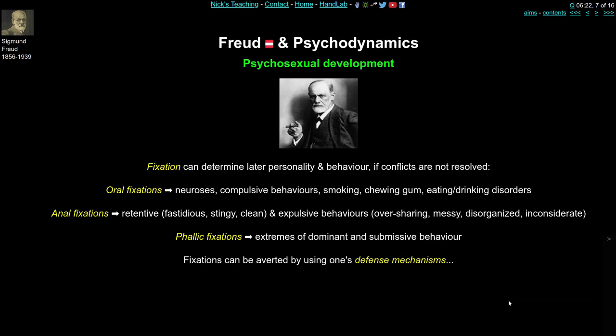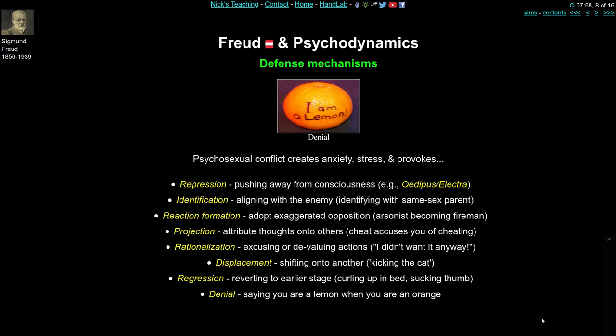Not everyone gets fixated at these stages, partly because we're able to defend ourselves from the traumas and conflicts that arise. We do this by using defence mechanisms, of which there are many — and this is pretty important for Freud's theory. Conveniently, if anything doesn't quite fit his theory, he can just bring in one of eight defence mechanisms to explain why something did or didn't happen.